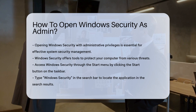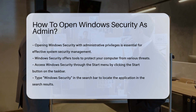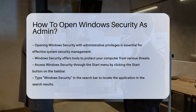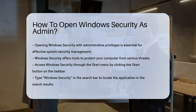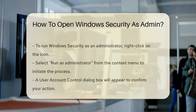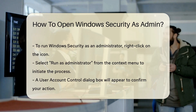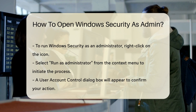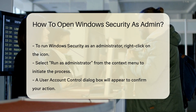To begin, you must access the Windows Security application through the Start menu. First, click on the Start button located in the taskbar. In the search bar, type Windows Security. You will see the application appear in the search results. However, to run it as an administrator, you need to take an extra step. Right-click on the Windows Security icon and select Run as Administrator.